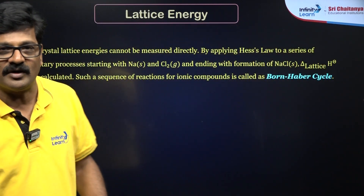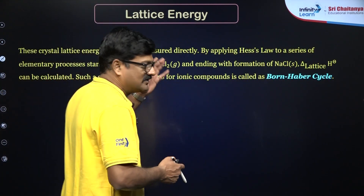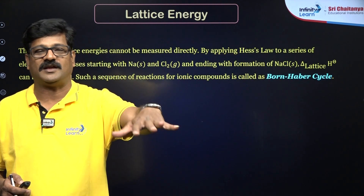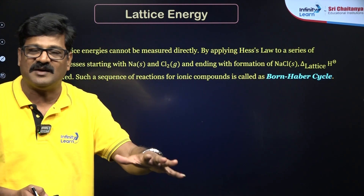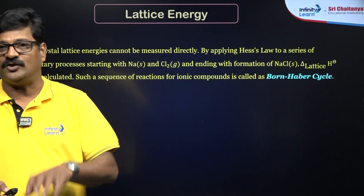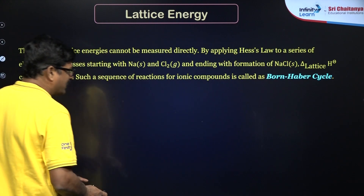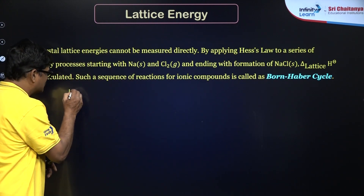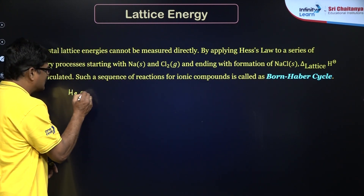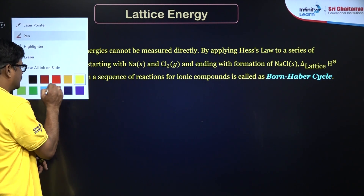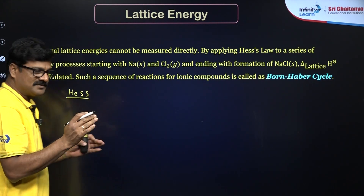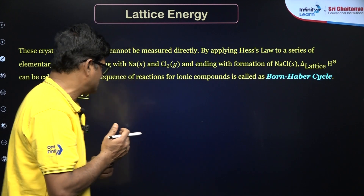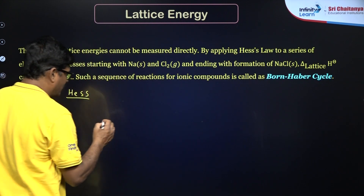By using the Born-Haber Cycle, you can calculate the lattice energy of sodium chloride. I want to take sodium chloride as an example and explain how to do that. It is based on Hess's Law. What is Hess's Law? Hess's Law is the law of constant heat of summation: a reaction, whether it takes place in a single step or multiple steps, the heat of reaction is the same.